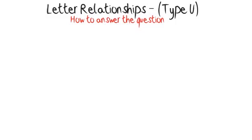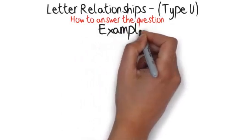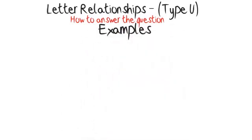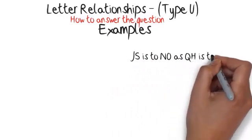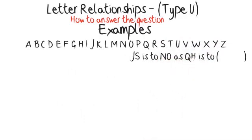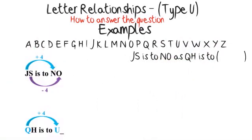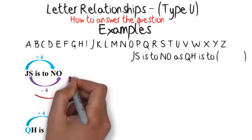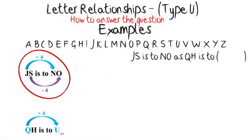Examples: J-S is to N-O as Q-H is to. First, look at the relationship between the first letters in the first pair, J-S is to N-O. Using the alphabet, you can see that to get from J to N you have to add four. Now look at the relationship between the second letters. J-S is to N-O. Using the alphabet, you can see that to get from S to O you need to subtract four.